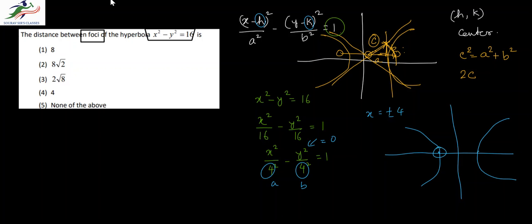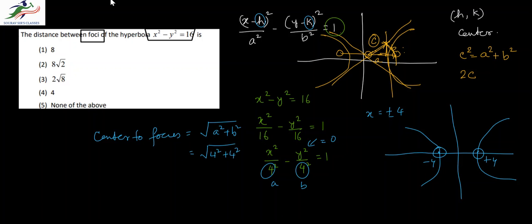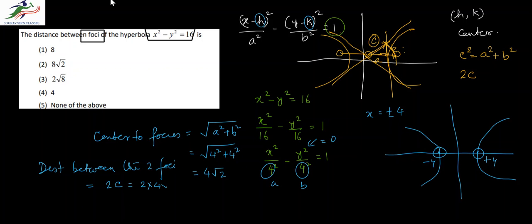Now we can calculate the distance from the center to the focus: c = √(a² + b²) = √(4² + 4²) = √32 = 4√2. The distance between the two foci is 2c = 2 × 4√2 = 8√2. In the given options, option 2 gives us 8√2, which is the correct choice.